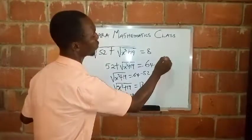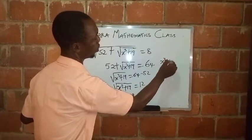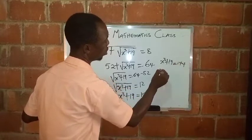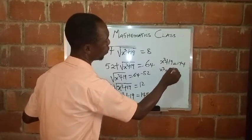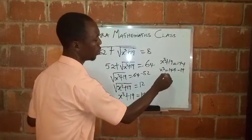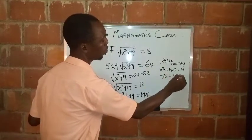So x cubed plus 19 equals 144. Then x cubed will now be 144 minus 19. x cubed equals 125.